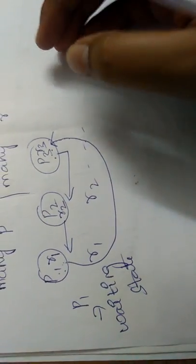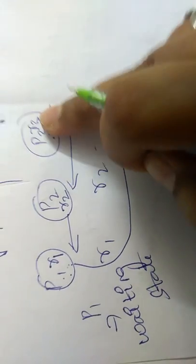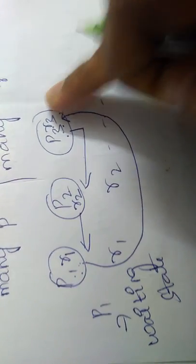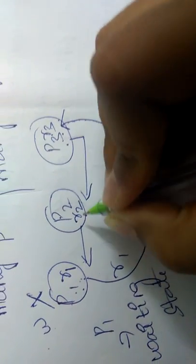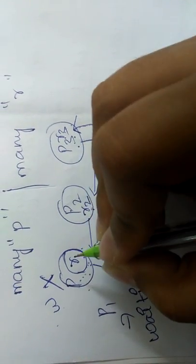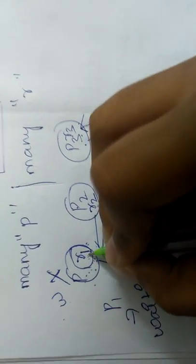When a process asks for resources and the resource is not available, the process will automatically go to the waiting state. Process one asked process three for resource three, but process three is already using it, so process one went to the waiting stage. Now process two is holding resource two but asking for resource one, which is already being used by process one, so process two also went to the waiting stage.